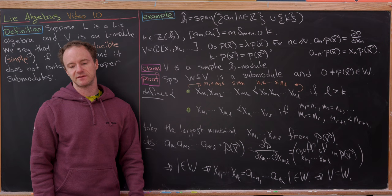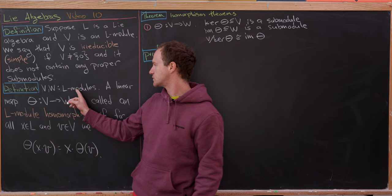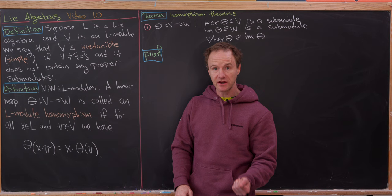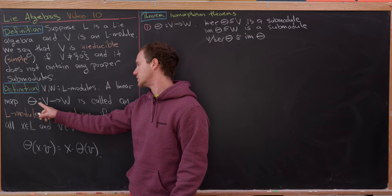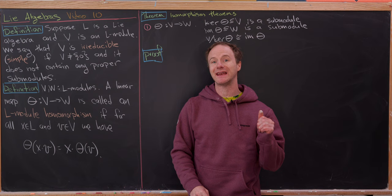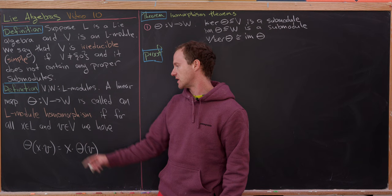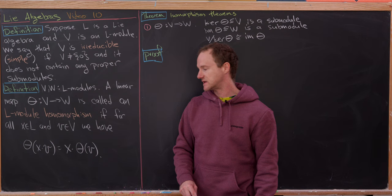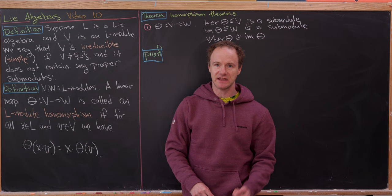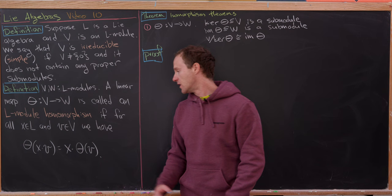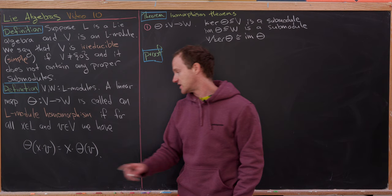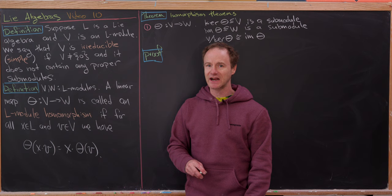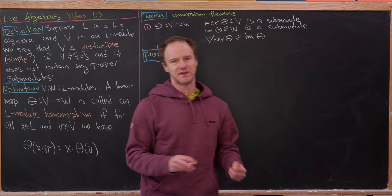Now let's look at maps between modules. Suppose we have two L-modules V and W. A linear transformation θ from V to W is an L-module homomorphism, or intertwining operator, if for all x in the Lie algebra and v in V, θ(x·v) = x·θ(v). The action x·v is on module V, while x·θ(v) is on module W — those actions may be quite different even though we use the same symbol.